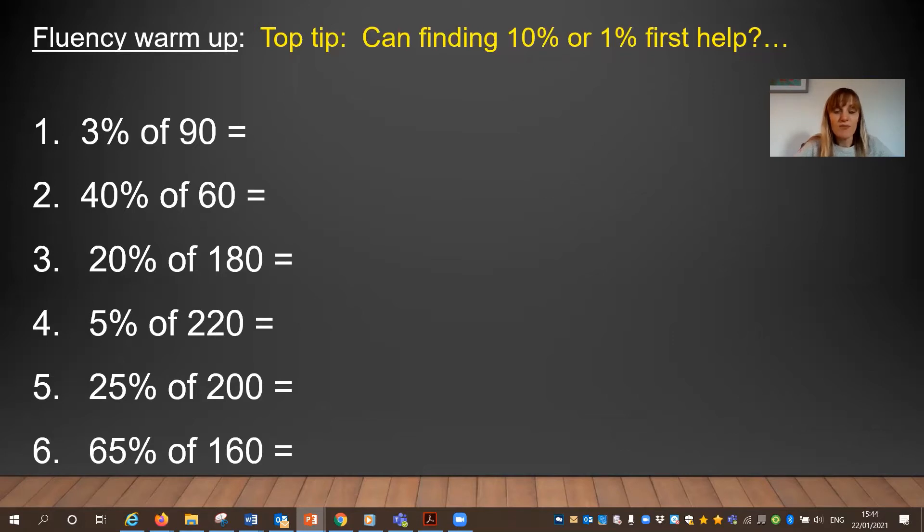So hopefully for number one, 3% of 90 you will have thought, well I need to know 1%, that's going to be the one to help me here. Now 1% of 90 would be 9, so 3% I'm going to times that by 9 would give me an answer of 27. 40% of 60 you'd need to find 10% this time of 60 which would be 6 and so 40% I'm going to multiply that by 4 to give an answer of 24.